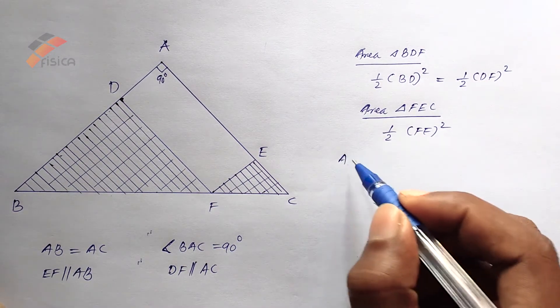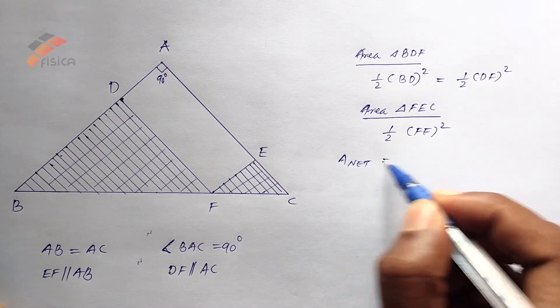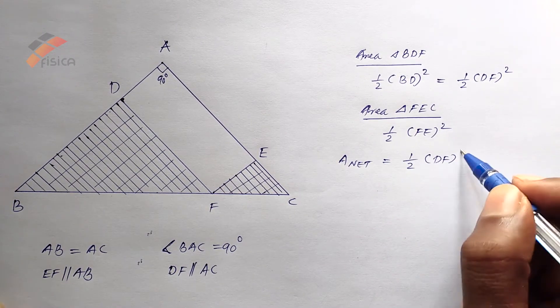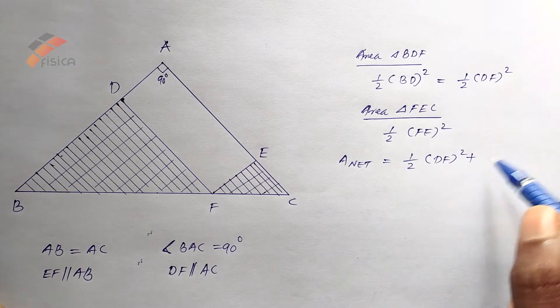The net area, A net equals half DF squared plus half FE squared.